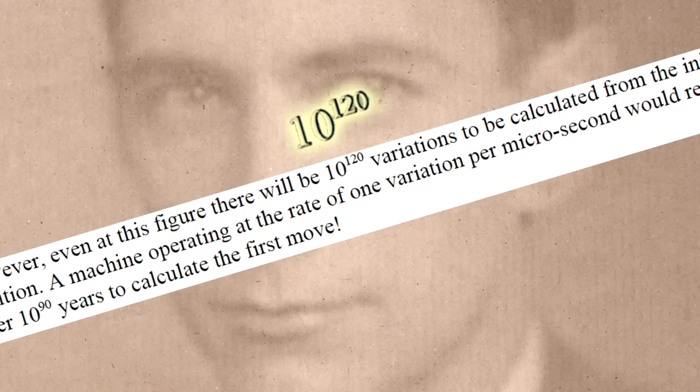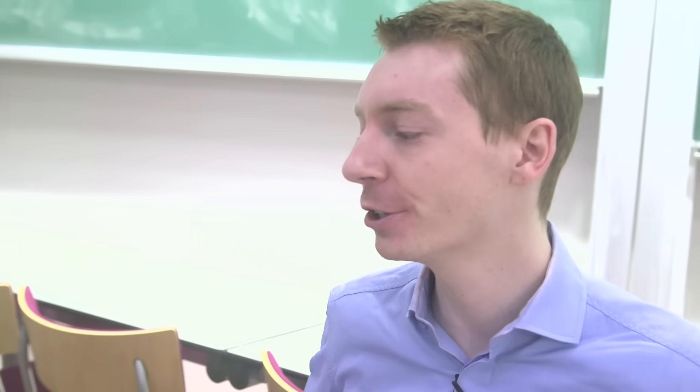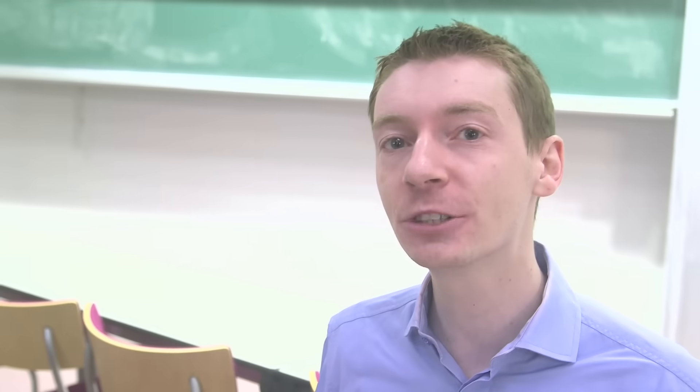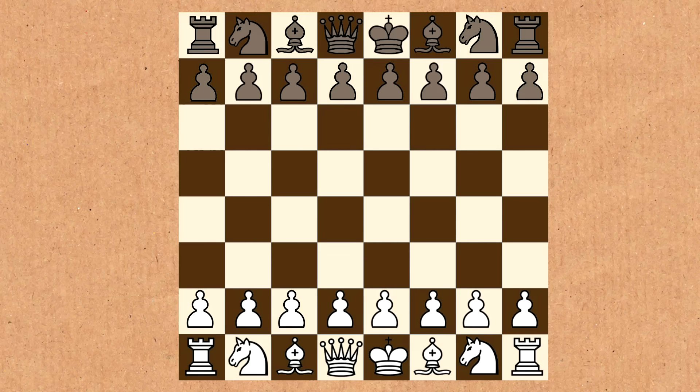That's just massive — billions and trillions of Googles, a huge number. If we compare that with the atoms in the observable universe, there are about 10 to the 80 atoms in the observable universe. So there are more games of chess; you could assign billions of games of chess for each atom in the universe.